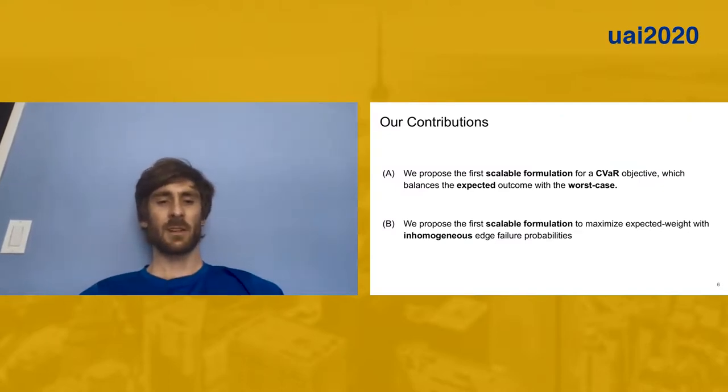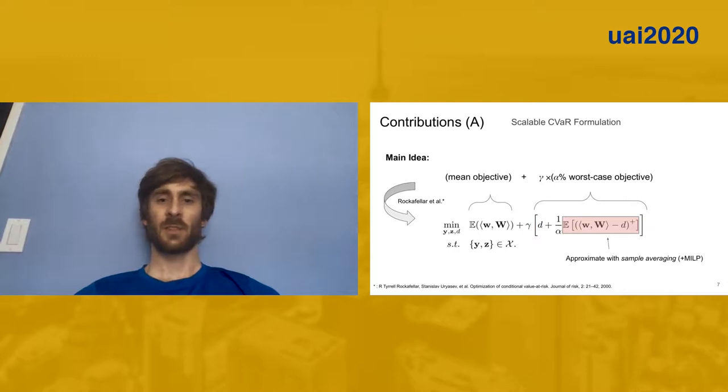Our two contributions we're going to talk about today are, first, we propose the first scalable formulation for a conditional variance at risk objective CVaR, which balances the expected outcome with the worst case. Second, we also propose the first scalable formulation for kidney exchange which maximizes expected weight with an inhomogeneous edge failure probability. I should say that both of these contributions use an inhomogeneous edge failure probability, which is a major step forward from previous work.